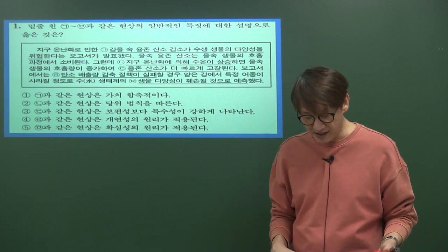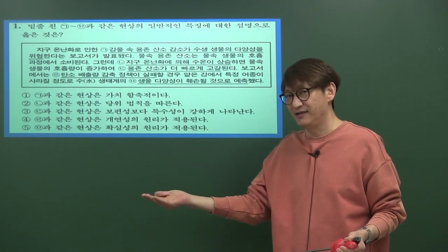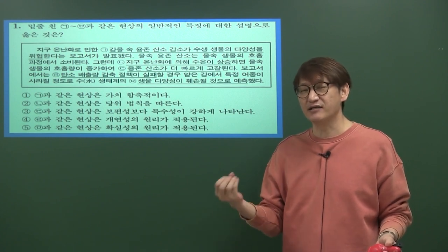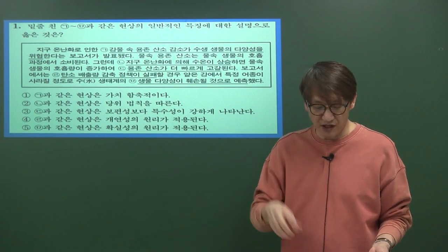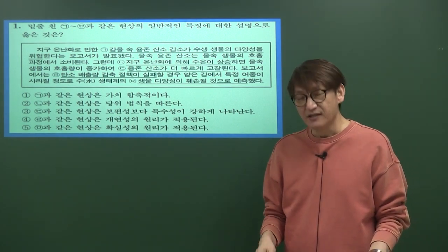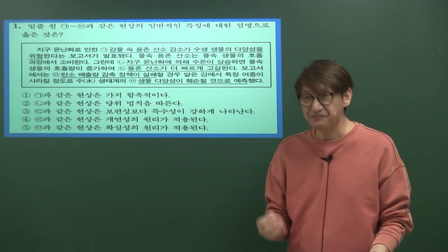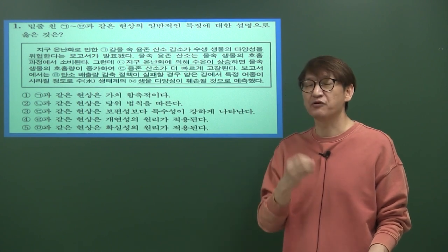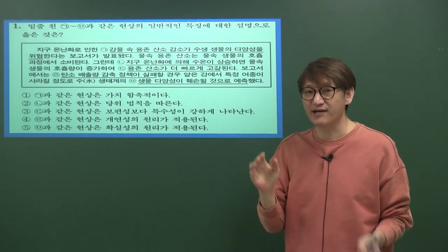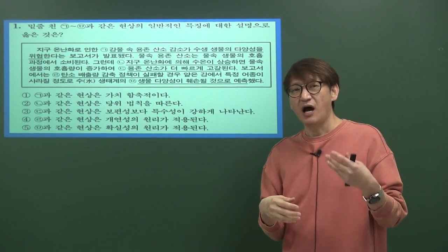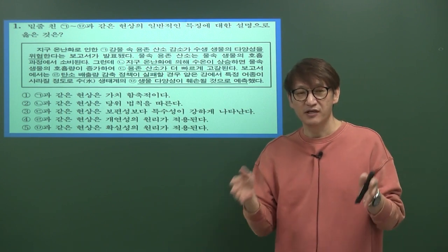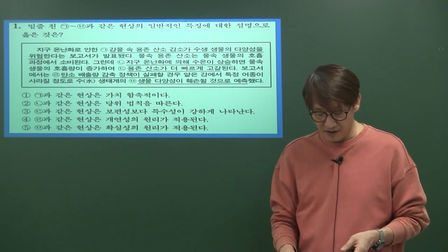자연현상은 존재법칙을 따르고, 당위법칙은 인간이 마땅히 해야 하는 도덕과 윤리 같은 것을 말합니다. 3번의 경우, 자연현상은 보편성만 나타납니다. 반면 사회문화현상은 보편성도 나타나고, 한국이나 미국처럼 문화가 다른 특수성도 나타납니다. 자연현상은 한국만 비가 오는 것이 아니라 미국에도 비가 오듯 보편성이 나타납니다. 이렇게 1번 문제를 정리하시면 됩니다.